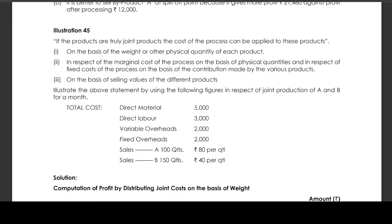Illustration 45. If the products are truly joint products, the cost of the process can be applied to these products on the basis of the weight or other physical quantity of each product, in respect of the marginal cost of the process on the basis of physical quantities, and in respect of fixed cost of the process on the basis of the contribution made by the various products, or on the basis of selling values of the different products.